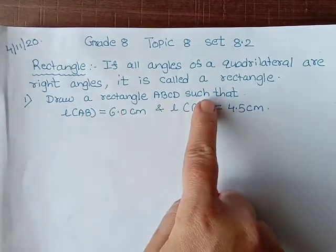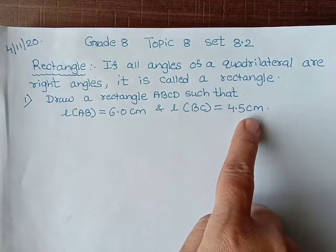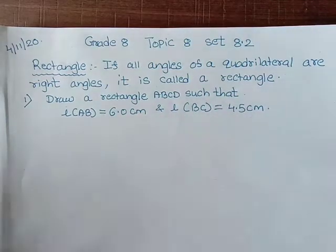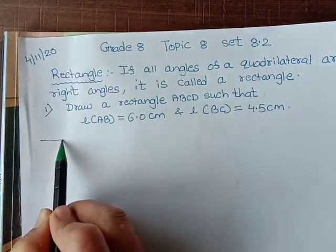Draw a rectangle ABCD such that AB is 6 centimeter and BC is 4.5 centimeter. Now as we know, we always draw a rough diagram. So this is a rectangle which we are going to draw.